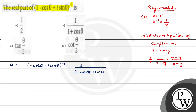Next, rationalization of a complex number. Whatever complex number is there, we need to take the conjugate of it and multiply and divide. So, applying the same property here, it will be multiplied by (1 minus cos theta minus i sine theta) over (1 minus cos theta minus i sine theta). This is the same property.